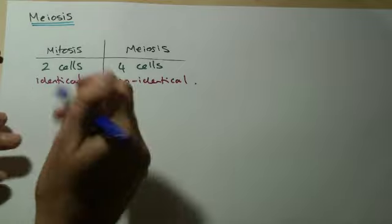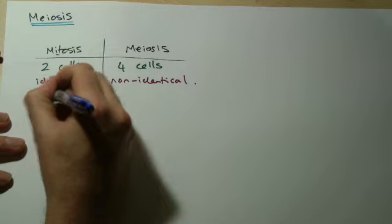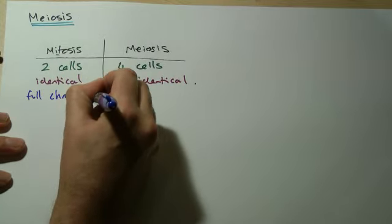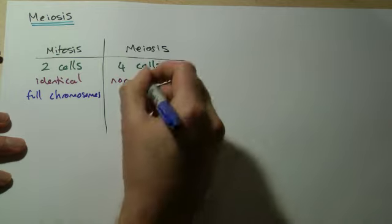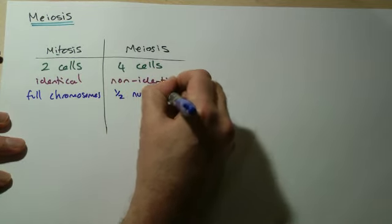In mitosis, you have the full set of chromosomes. I'll explain that in a second. In meiosis, you only have half the number of chromosomes.